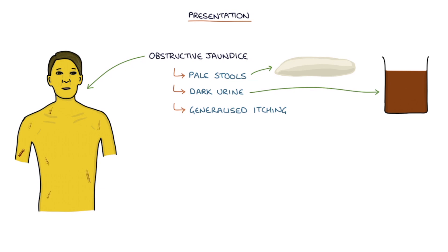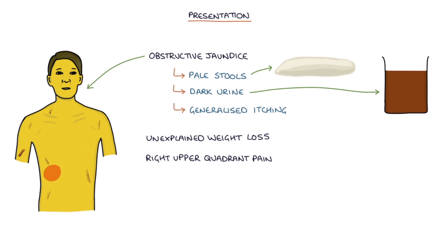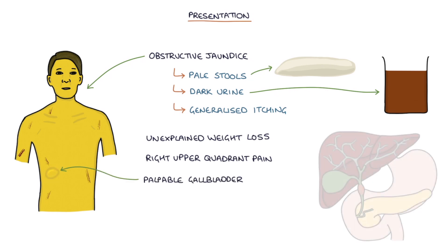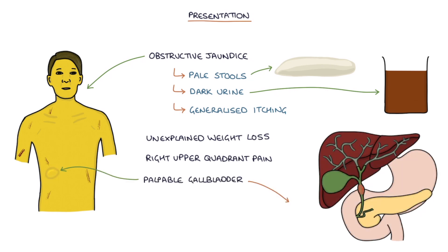Other non-specific signs and symptoms of cholangiocarcinoma include unexplained weight loss, right upper quadrant pain, a palpable gallbladder — which is swollen due to an obstruction in the duct distal to the gallbladder, causing a back pressure of bile building up inside the gallbladder — and finally hepatomegaly.